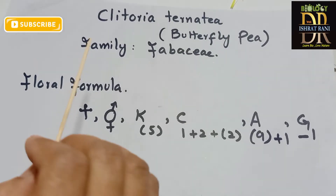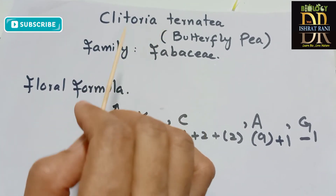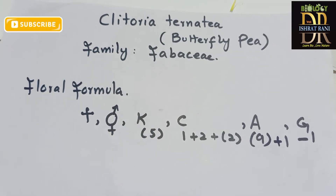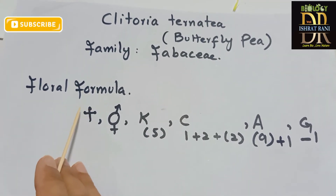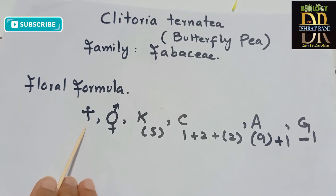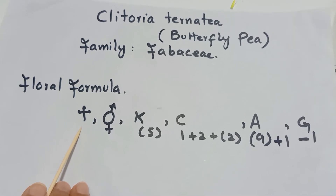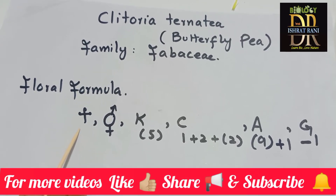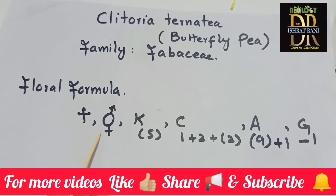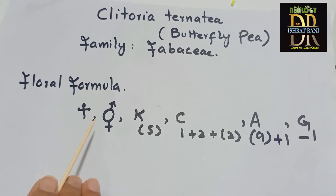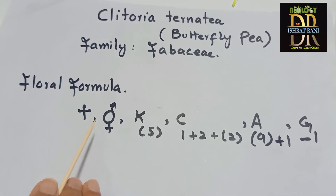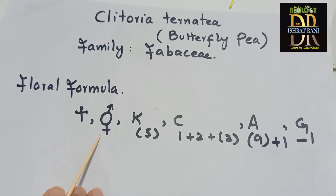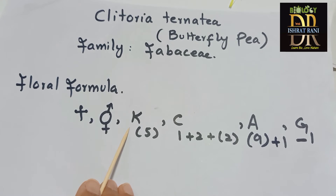So Clitoria ternatea or butterfly pea belongs to family Fabaceae. Now we will discuss the floral formula. It is zygomorphic — we cut it from the middle axis into two equal halves. It is bisexual because both androecium and gynoecium, or stamens and carpel, are present. We observe the sepals — the calyx.